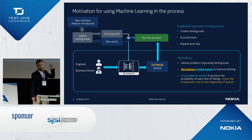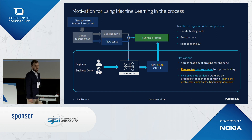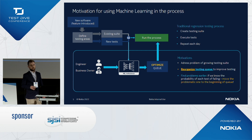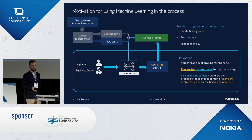Starting from the top left of the slide, new software requires a new batch of regression testing. The regression suite is composed of two things: the existing suite — the very same tests executed on the previous build — and additional tests related to new functionalities. For a few executions, the testing suite may be the same, but it changes slightly over time. After composing the final testing suite, we run the process — creating the suite, executing tests, and repeating that every day.